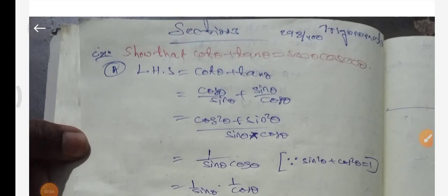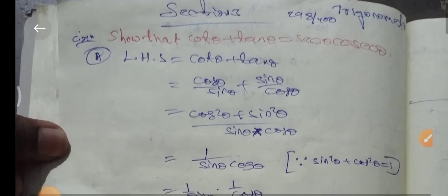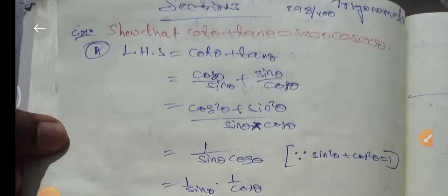Section 3 questions: prove that cot θ plus tan θ is equal to cosec θ times sec θ. Left hand side equals cot θ plus tan θ. cot θ is equal to cos θ divided by sin θ, and tan θ is equal to sin θ divided by cos θ.